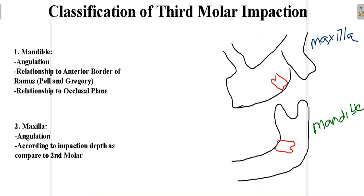Classification of third molar impaction is different for mandible and maxilla — not a big difference but slight differences between them. In the mandible the classification is based on angulation and relationship to the anterior border of the ramus, known as Bell and Gregory's classification, and relationship to the occlusal plane. For the maxilla, the classification is based on angulation and according to impaction depth as compared to the second molar. On the right hand side you can see the maxilla with the third molar drawn in red, and in the mandible also, and you can see how differently they are impacted.